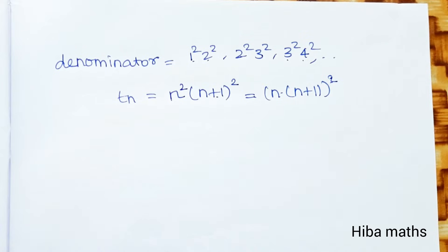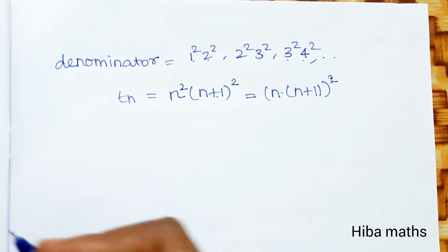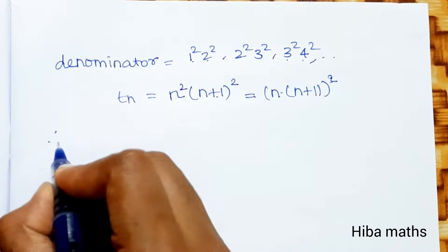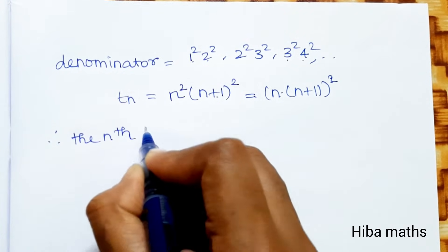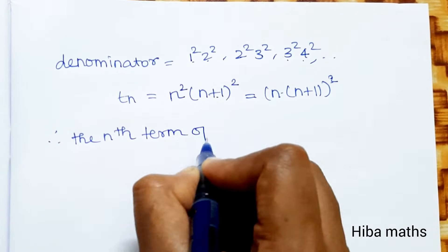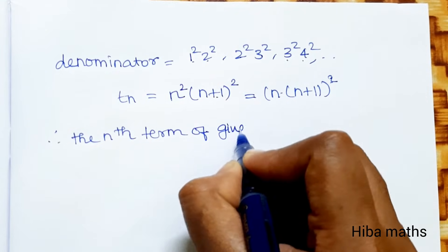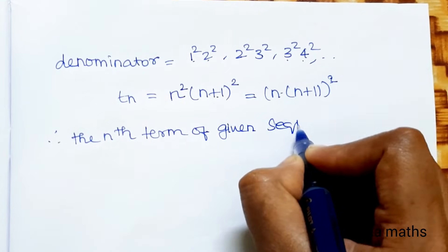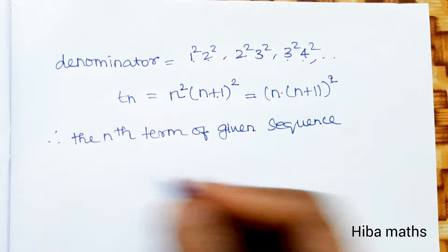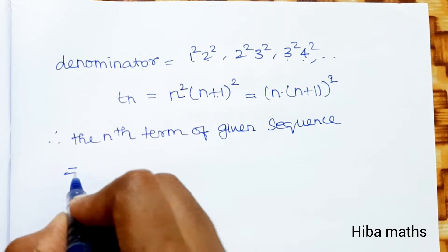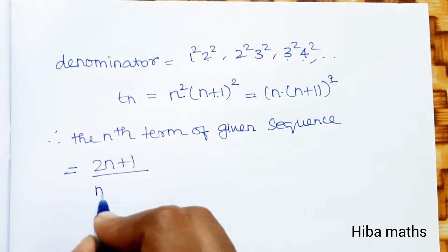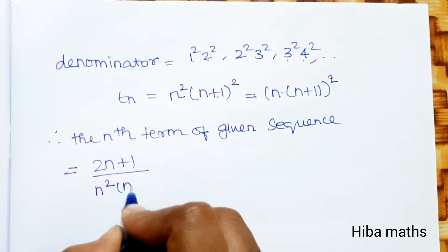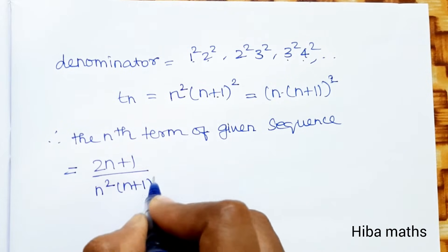Therefore, the nth term of the given sequence is (2n+1) divided by n²·(n+1)². Now we can proceed to express this as a difference of two terms.